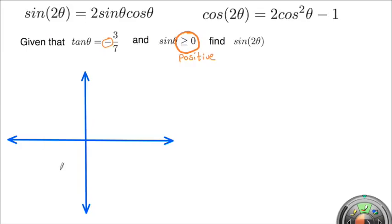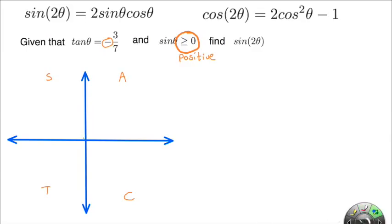So which quadrant is tangent of theta negative? Tangent is negative in the second and fourth quadrants — all students take calculus. Tangent is negative in those two quadrants, and sine is positive only in the second quadrant. So we're going to draw our reference triangle in the second quadrant.